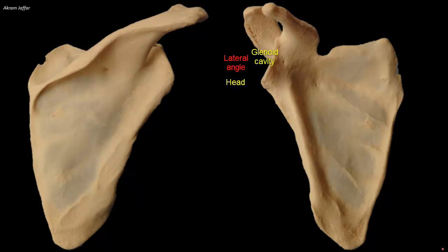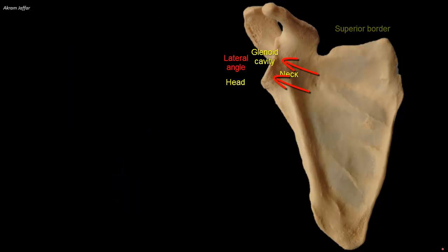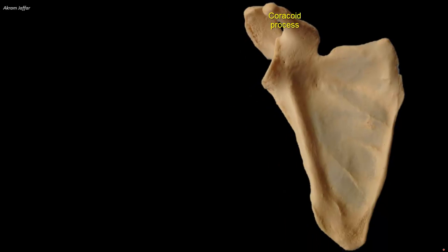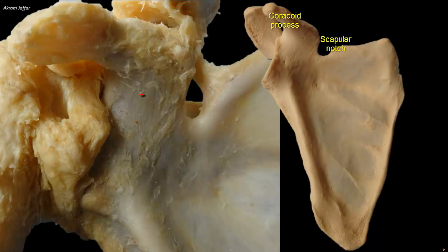The shallow constriction between the head and body defines the neck of the scapula. The superior border of the scapula is marked in its lateral part by the suprascapular notch, located where the superior border joins the coracoid process. The notch is also called the scapular notch and is bridged by the transverse scapular ligament.